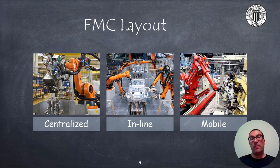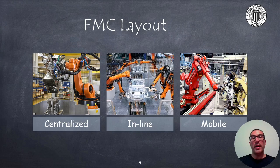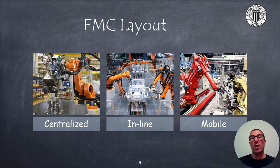There are different layouts of flexible manufacturing cells concerning robots: centralized, inline, or mobile. In the centralized layout, the robot is the main element of the cell with all necessary equipment arranged in a circle or semicircle around it. In the inline layout, a conveyor belt carries the product and the robot or robots perform operations on the sides of the conveyor belt. In a mobile layout, the robot can move freely or along a conveyor belt inside the cell, giving it a much larger workspace and enabling it to transport parts from one machine to another.